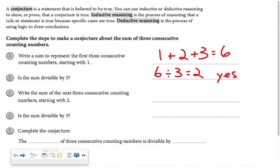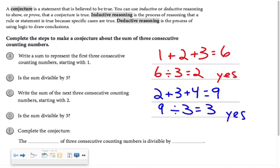Write a sum of the next three consecutive counting numbers starting with 2. So 2 plus 3 plus 4 is 9. And then they're asking us the same question. Is that sum divisible by 3? So that means I'm checking whether 9 divides nicely by 3. And it does. So yes.